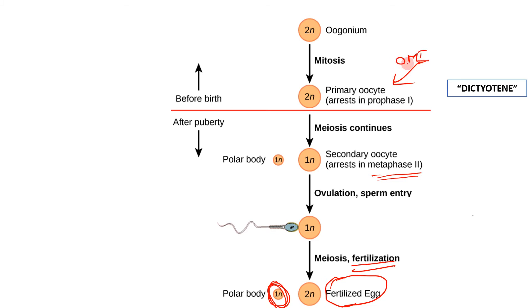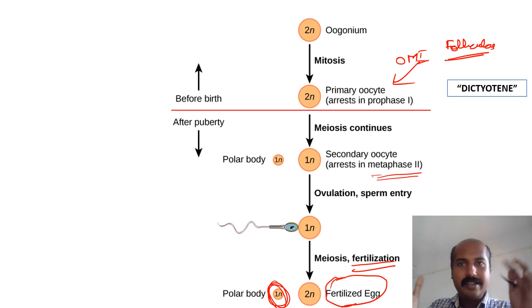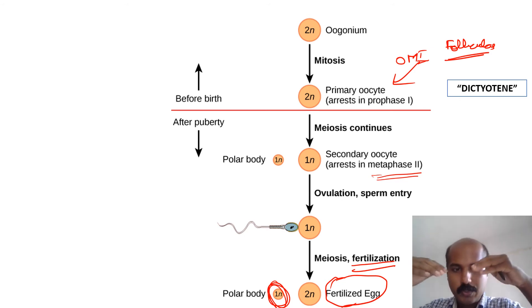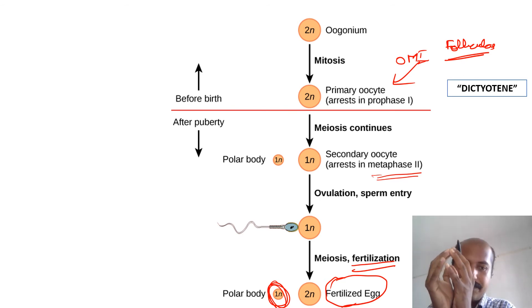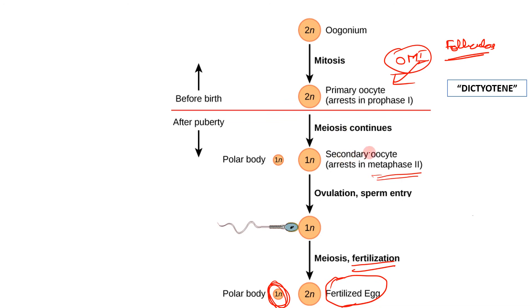The first meiotic arrest is maintained due to a peptide called oocyte maturation inhibitor, which is produced by the follicular cells surrounding the oocyte. This illustrates why you cannot learn oogenesis without learning the follicular cycle — the follicular cells and oocyte interplay with each other. The follicular cells provide oocyte maturation inhibitor, which arrests the oocyte in the diplotene phase. This is a very common MCQ topic.